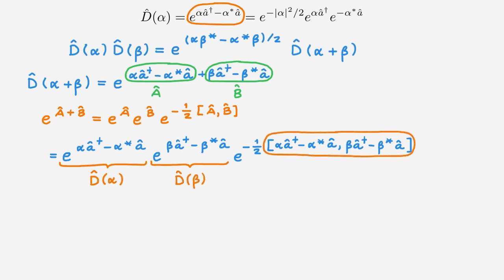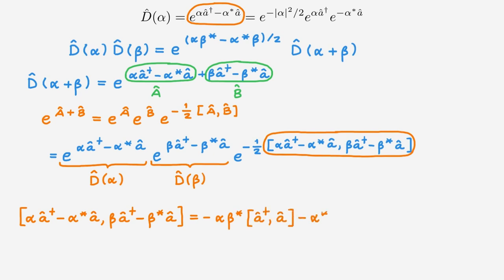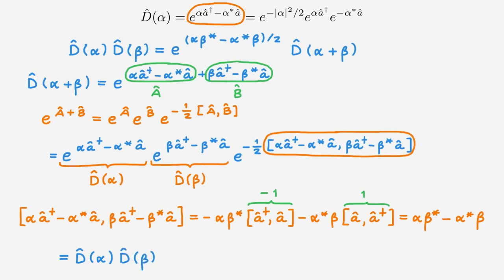For the commutator, the only non-zero terms are those involving the cross-commutator of A and A†. The commutator [A, A†] equals minus one and [A†, A] equals one, so we end up with α β* minus α* β. Using this result, we can write D(α+β) as equal to D(α) times D(β) times this scalar exponential, confirming the stated result. This property turns out to be key to understanding the name displacement operator.